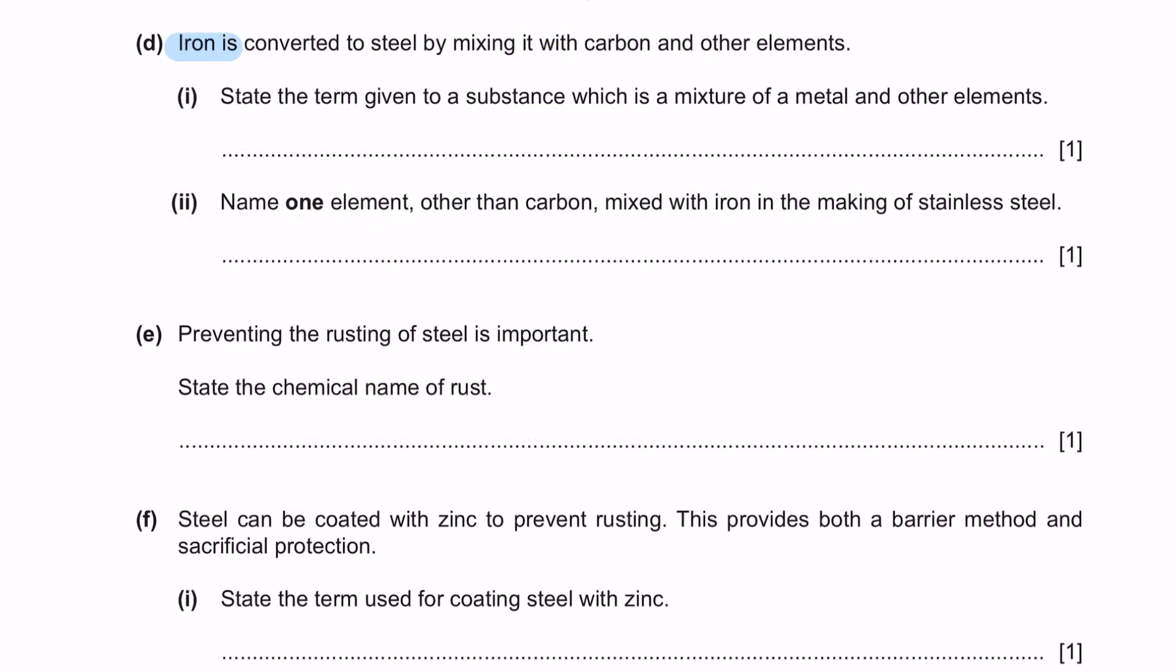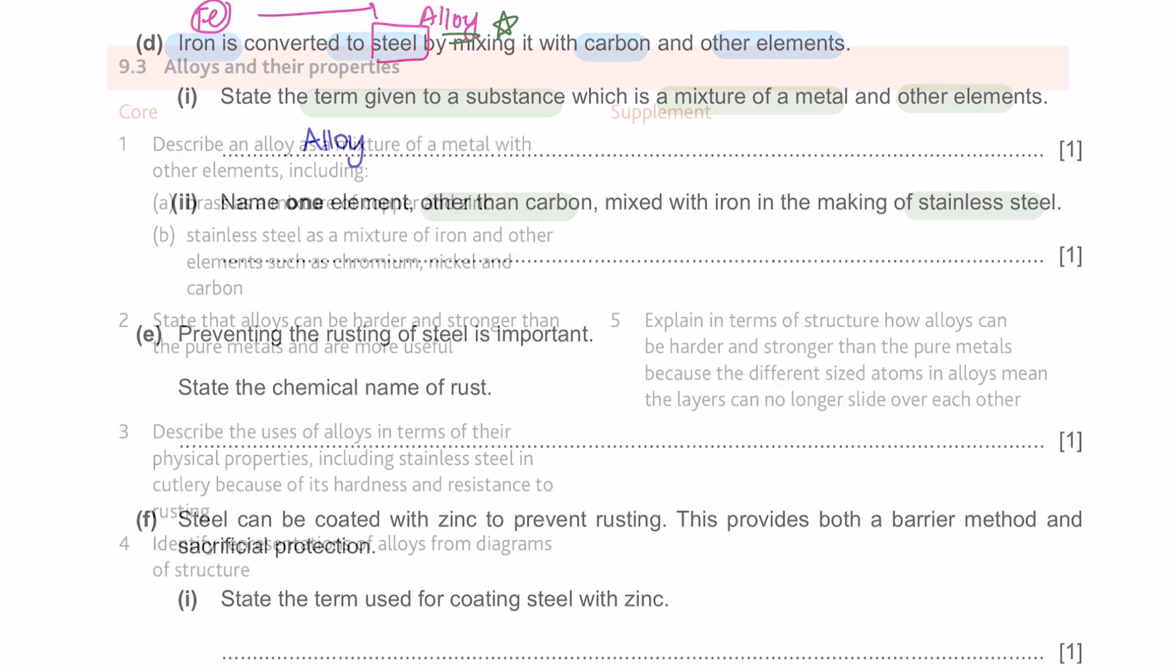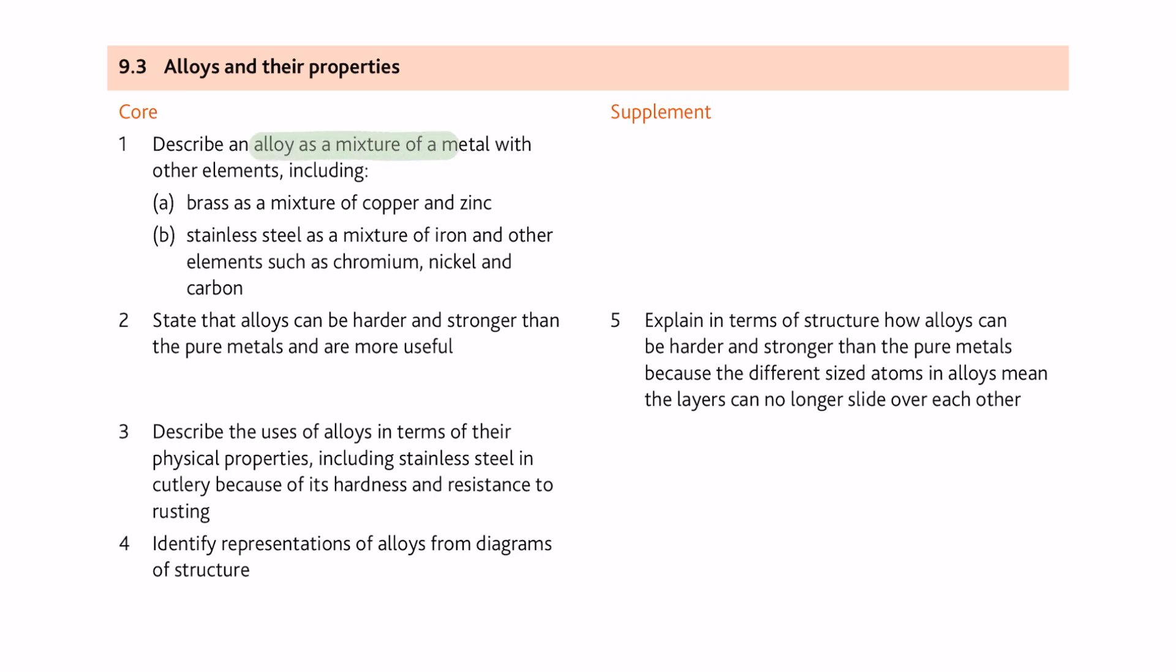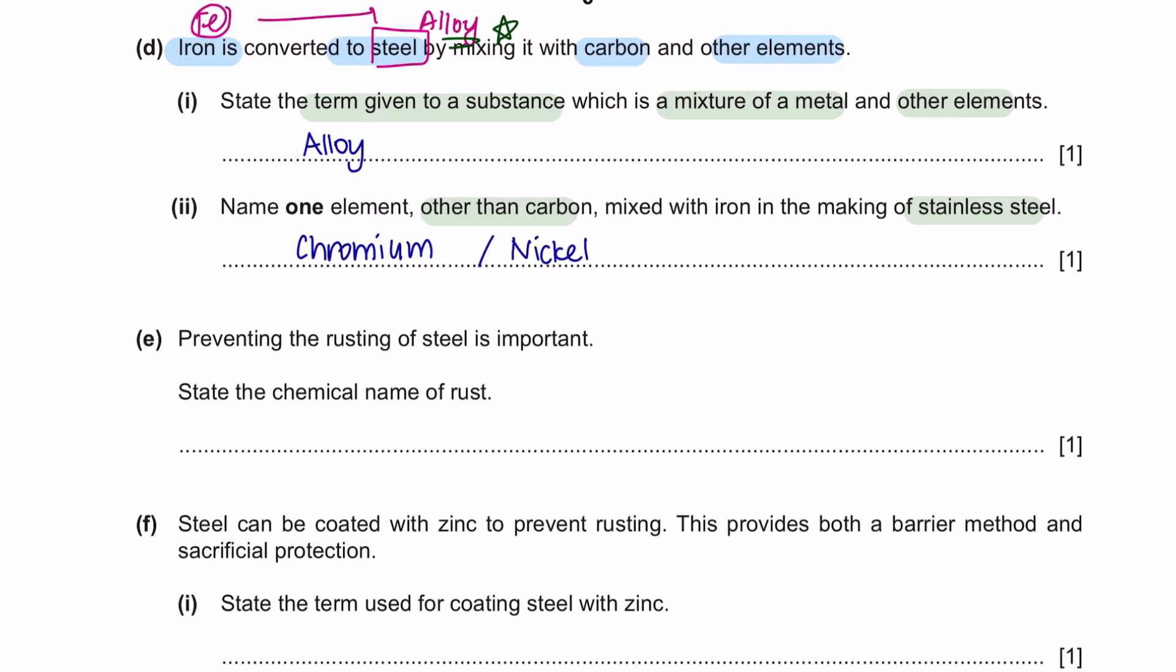Question D. Iron is converted to steel by mixing it with carbon and other elements. Iron is being converted into steel. Steel is an example of alloy. Part 1: state the term given to a substance which is a mixture of a metal and other elements. I mentioned already, it is an alloy. Next, part 2: name one element other than carbon mixed with iron in the making of stainless steel. In your specification, they have described to you that alloy is a mixture of a metal with other elements. There are 2 alloys that you need to know. The first one is brass and the second is stainless steel. Brass is a mixture of copper and zinc, something that you must know. And next, stainless steel is a mixture of iron and other elements such as chromium, nickel and carbon. So you can either mention it is chromium or nickel.